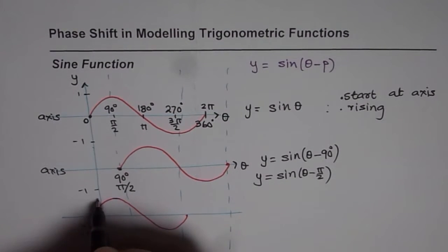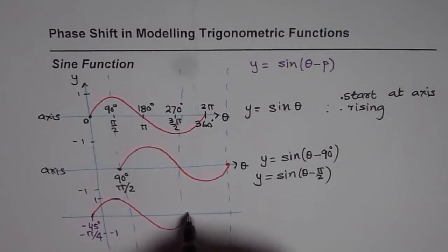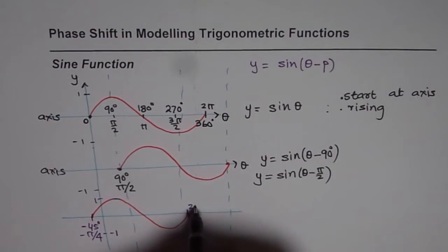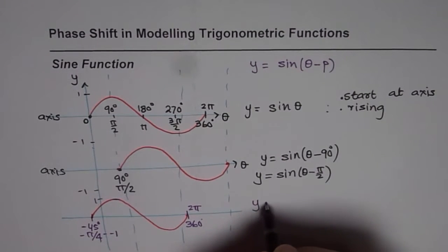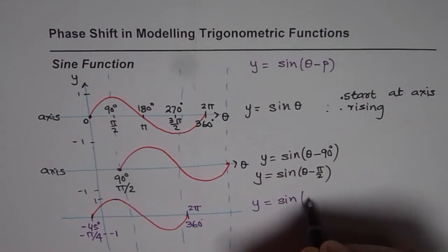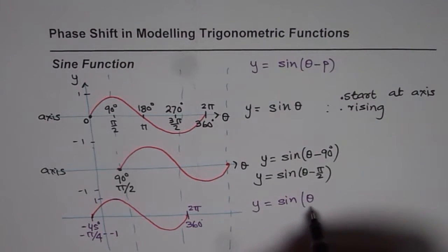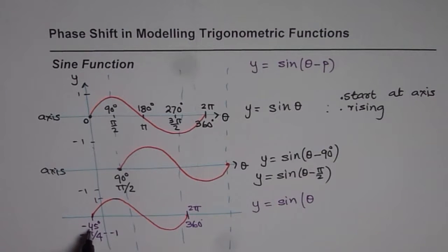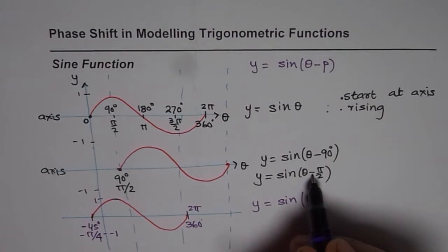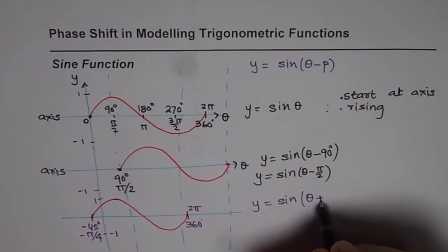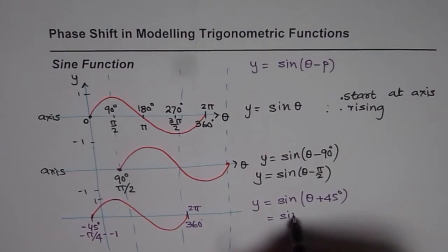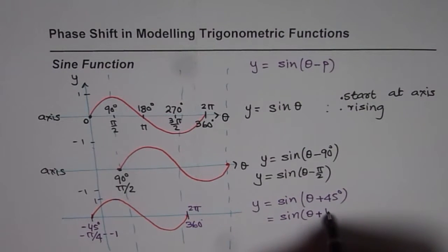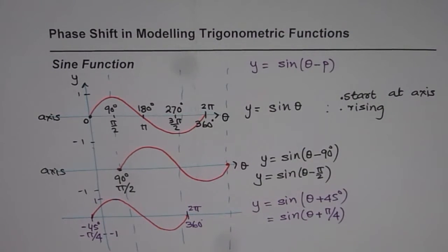Now you need to write down the equation for this sine wave whose maximum is 1 and minimum is -1 and whose time period is 2π in radians or 360 degrees. The equation should be y = sin(θ - ...) or plus, we have moved left so minus 45 minus and minus makes it plus, so it'd be plus 45 degrees, or it could be also written as sin(θ + π/4). I hope you get it.